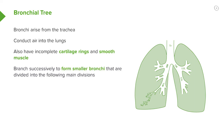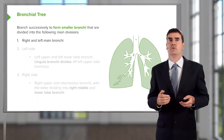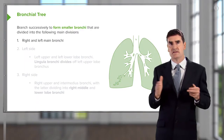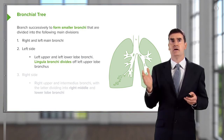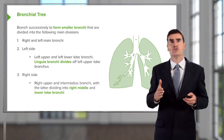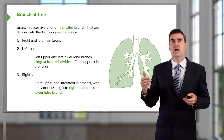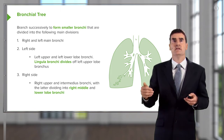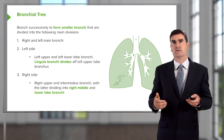The bronchi branch successively, forming smaller and smaller bronchi, and eventually you end up with the alveoli. The main divisions initially are the right and left main bronchi. The left main bronchus then divides into a left upper bronchus and a left lower bronchus. The right side divides into a right upper bronchus, then an intermediate bronchus, which then divides into a right middle bronchus and a right lower lobe bronchus.